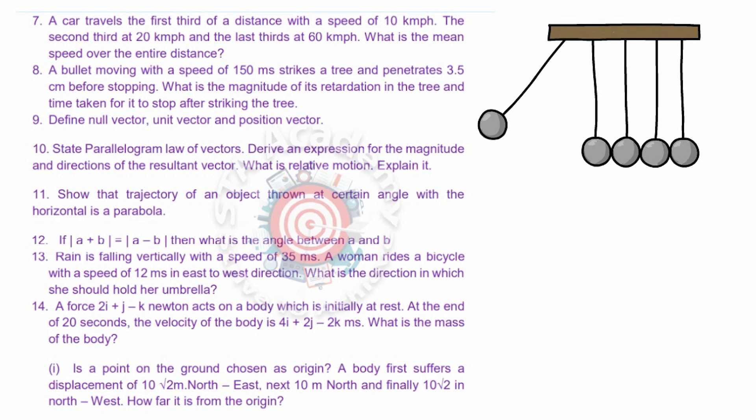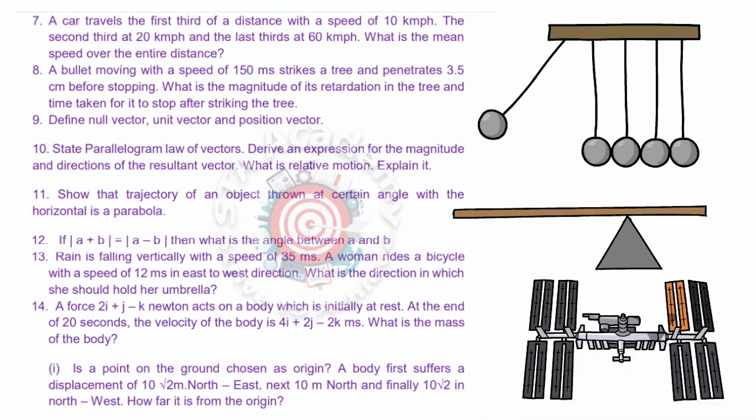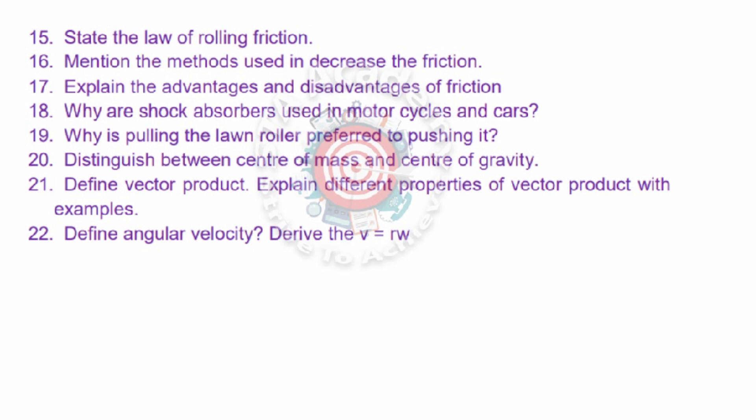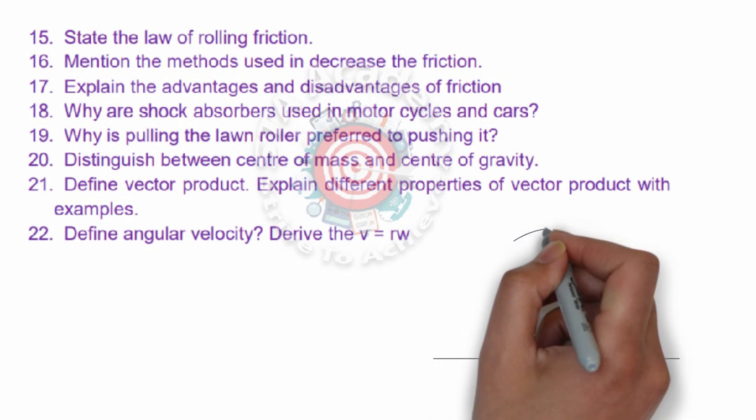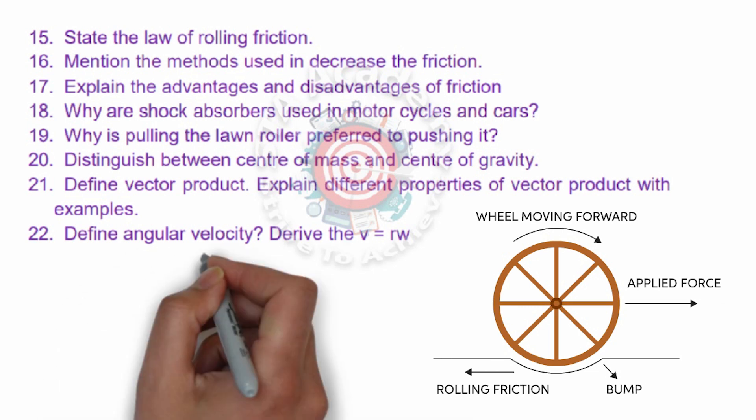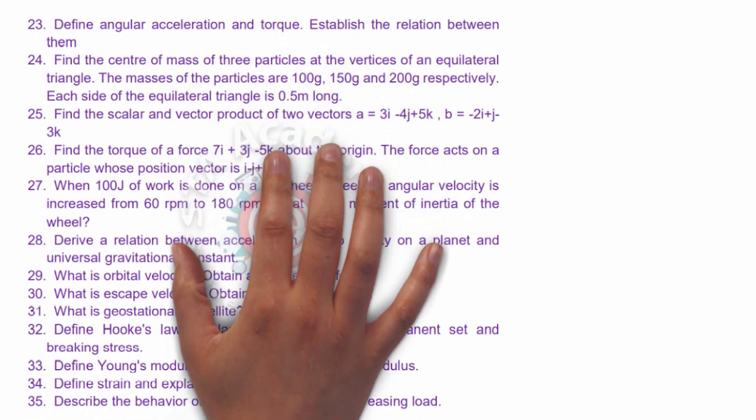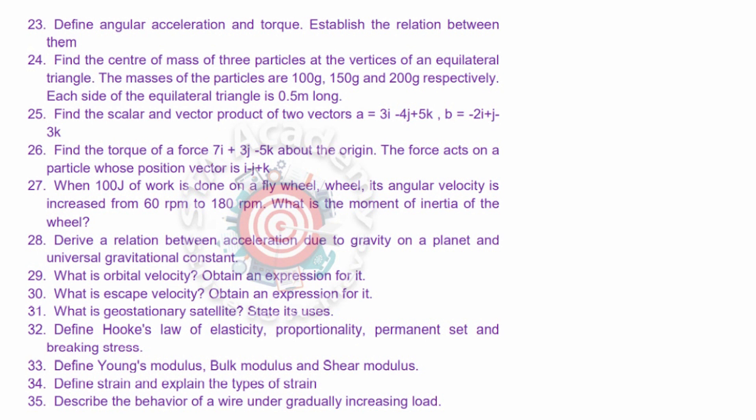Twelfth is a numerical problem, very important SAQ. Thirteen is also a numerical problem. Fourteen is also a numerical problem. Fifteen: state the law of rolling friction. Sixteen: mention the method used in decreasing the friction. Seventeen: advantages and disadvantages of friction. Eighteen: very important question, why are shock absorbers used in motorcycles and cars. Nineteen: pulling the lawn roller preferred to pushing it. Twenty: very important, distinguish between center of mass and center of gravity. Twenty-one: vector product. Twenty-two: angular velocity, very important question. Twenty-third is angular acceleration and torque. Twenty-fourth: center of mass of three particles, very important numerical. Twenty-fifth is also a very important numerical. Twenty-sixth is also an important numerical that definitely gives you four marks. Twenty-seven is also a numerical.